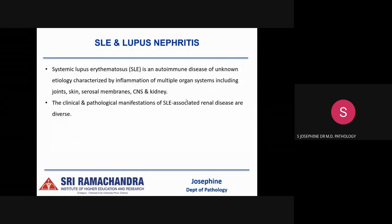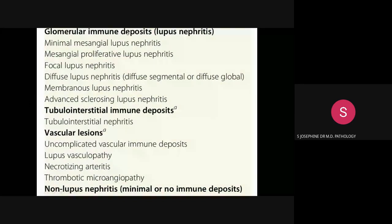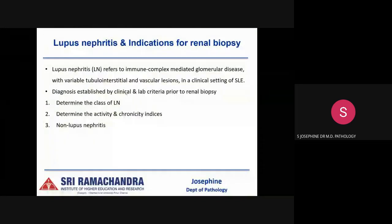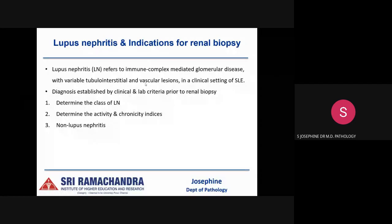This table shows the wide spectrum of renal lesions, which can involve the glomerular compartment, tubular interstitial, or vascular compartment. It can also cause non-lupus nephritis in which there are minimal or no immune deposits. Lupus nephritis is when the disease involves the glomerular compartment predominantly — immune complex-mediated glomerular disease with variable tubular interstitial and vascular lesions appearing in a clinical setting of SLE.